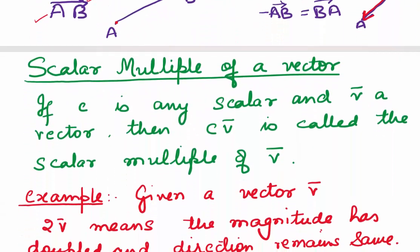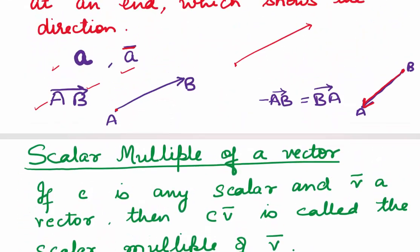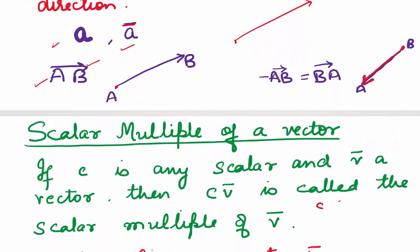Now what does scalar multiple of a vector mean? If you are given any vector v and c is some scalar quantity — where scalar means any real number — then cv is called the scalar multiple of v. What does that do? It scales our vector. So you can say that c scales the vector.